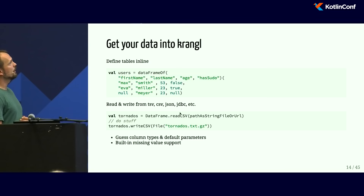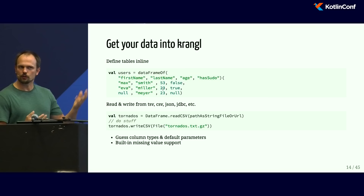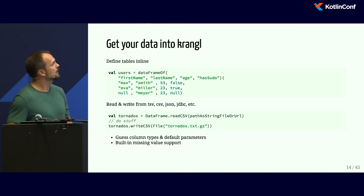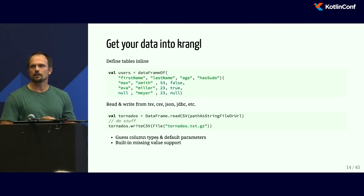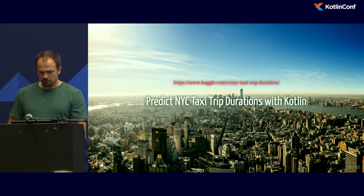How would we get our data into the system? We could use a builder API to define data in place, but we can also read and write from JSON, TSV, CSV, databases, and so on. All of this has been implemented for Krangl, which tries its best to guess column types and have sensible default parameters. Let's try to get our taxi data into our interactive compute environment.